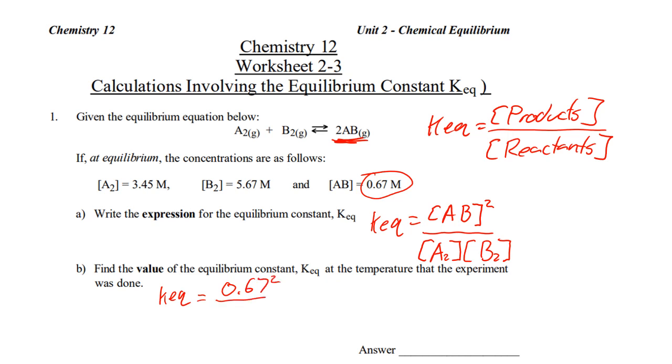Keq squared, over 3.45, times 5.67. Plug that into my calculator. Keq equals 0.67 squared, divided by 3.45, divided by 5.67. There's no units for Keq, so it's 0.023.